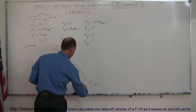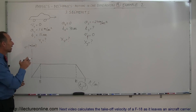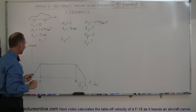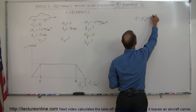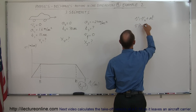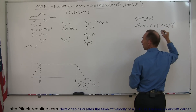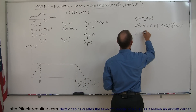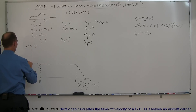The time in the third segment and the distance x in the third segment are what we're solving for. Starting with the first segment, we accelerate at 1.6 meters per second squared for 15 seconds. Using V = V₀ + at, with initial velocity zero: V at t = 15 seconds equals zero plus 1.6 times 15. That gives 24 meters per second — the velocity reached after the first segment.